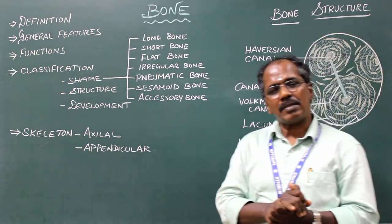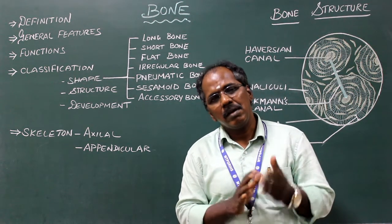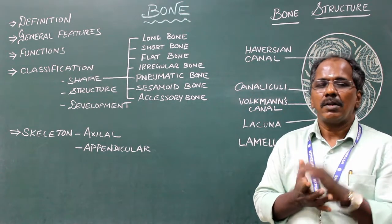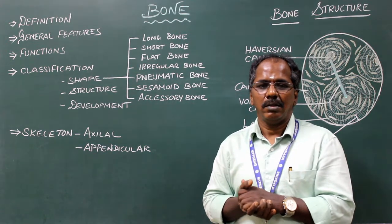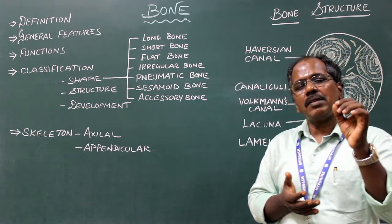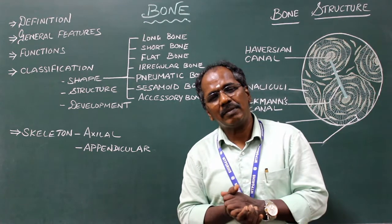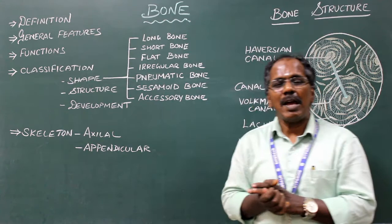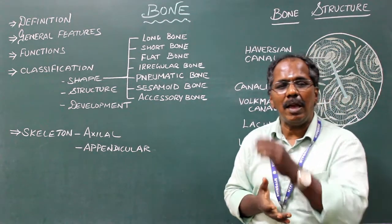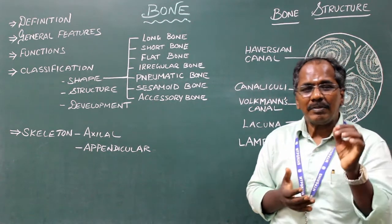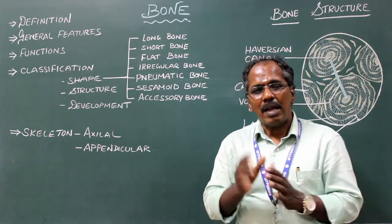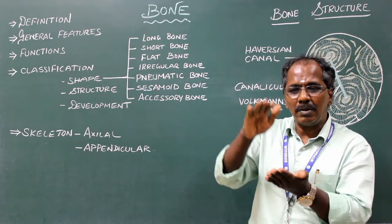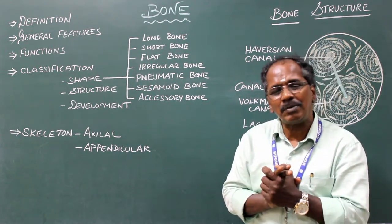Bones may be classified according to structure into compact bone and spongy or cancellous bone. In case of long bones, compact bone is present in the shaft — it is the very hard and shiny part. Cancellous bones are present in the ends of long bones. In case of flat bones, the cancellous or spongy bone is present in the middle layer, sandwiched between two layers of compact bone plates.